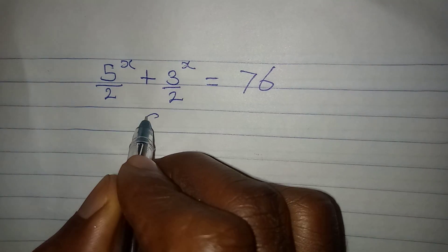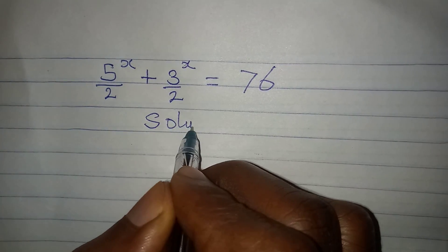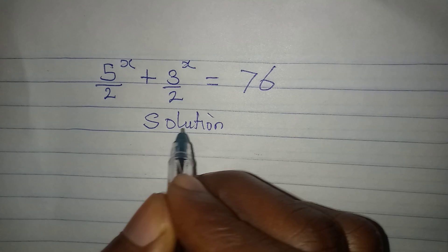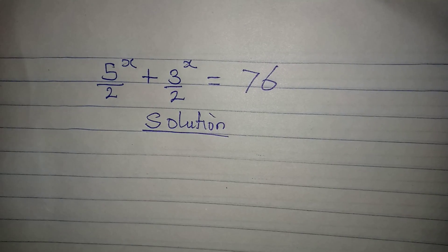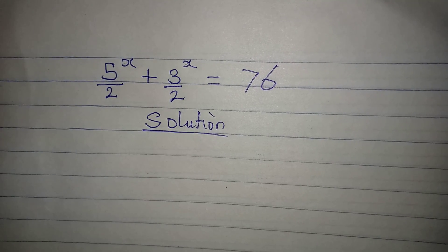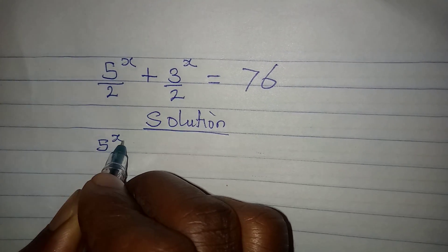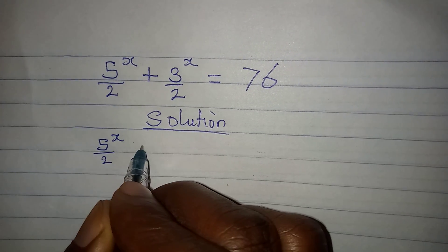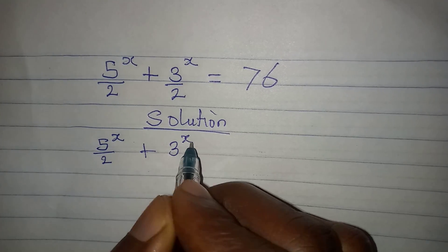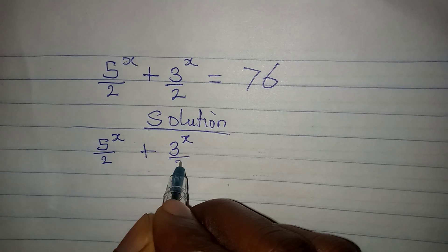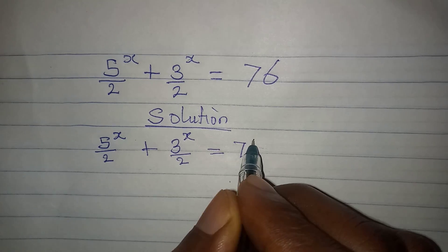Hello everyone, let's provide the solution to this problem very quickly. We have 5 to the power of x over 2, plus 3 to the power of x over 2, equal to 76.